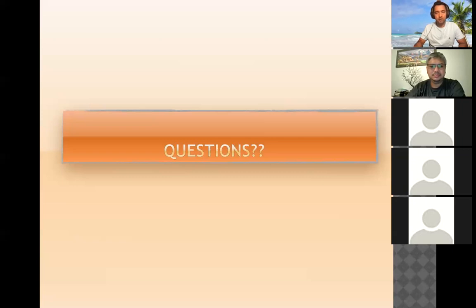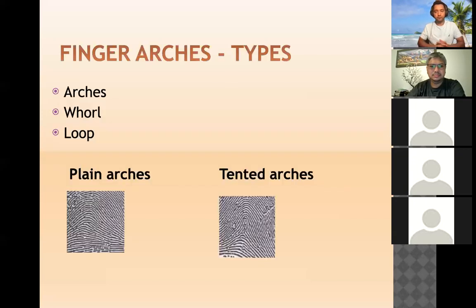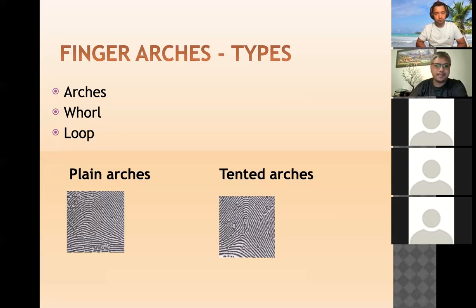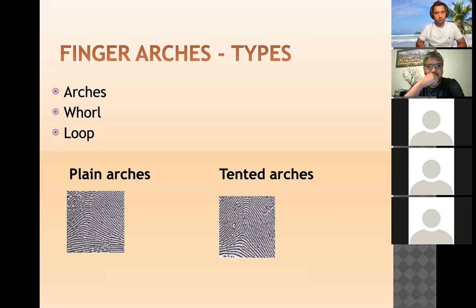When we look at a finger, how does one person's fingerprint differ from another's? It is how the patterns are formed from the lines. There are three types: the first is arches, the second is whorls, and the third is loops.